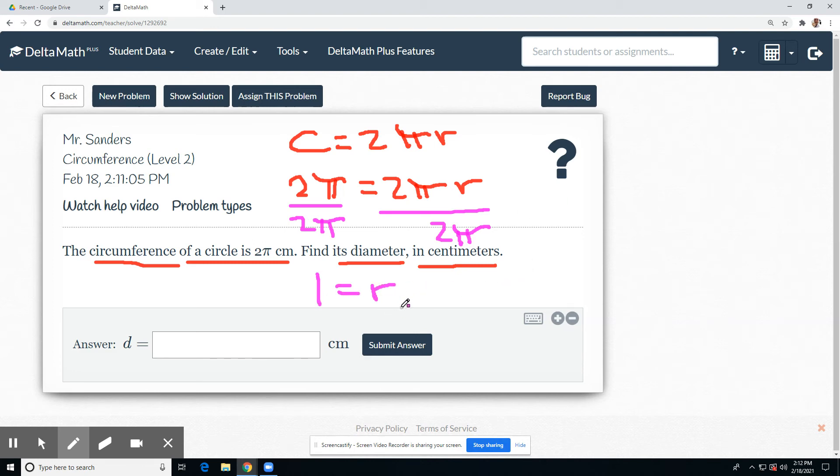And remember, twice the radius is diameter. So twice the radius equals our diameter. We just found out our radius was 1. 2 times 1 equals d. 2 equals d.